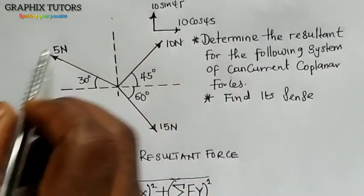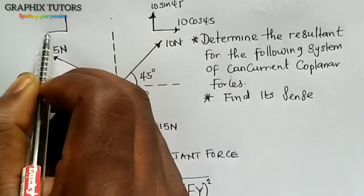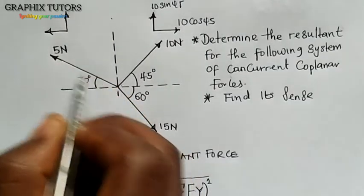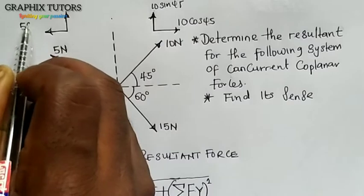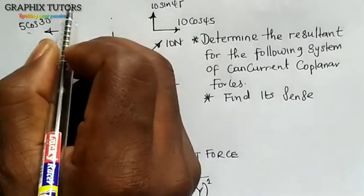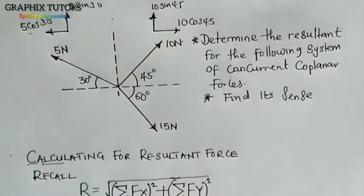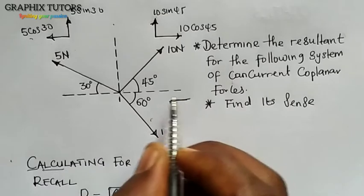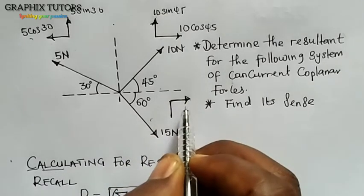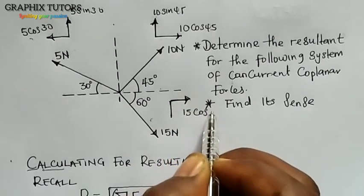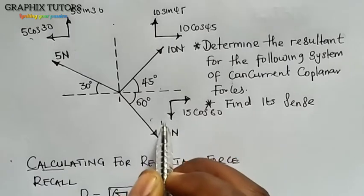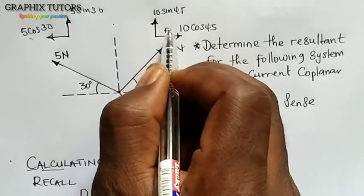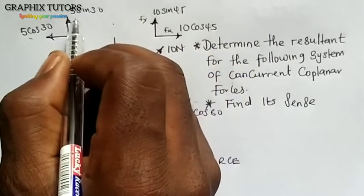For the next force — 5 Newton — it is going in this direction, so we will resolve it. The horizontal will be 5 cos 30 and the vertical will be 5 sin 30. For the 15 Newton force pointing downward, the horizontal will give me 15 cos 60 and the vertical will be 15 sin 60. These are my Fx and Fy components respectively.